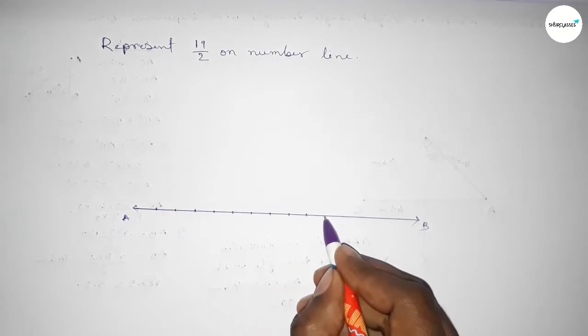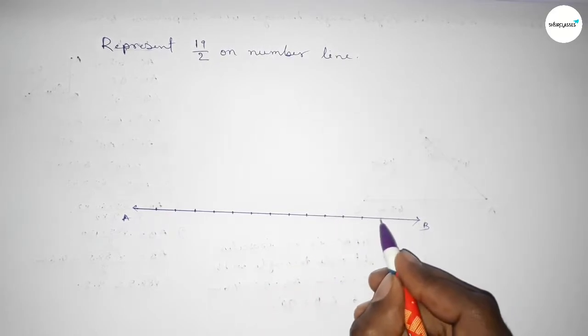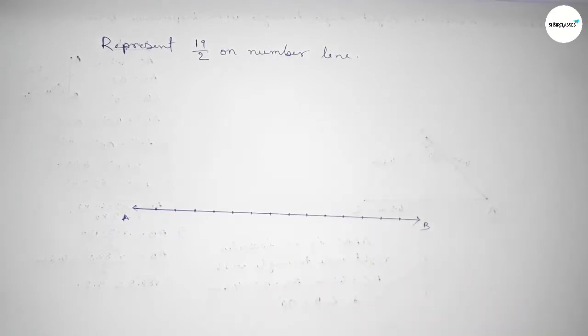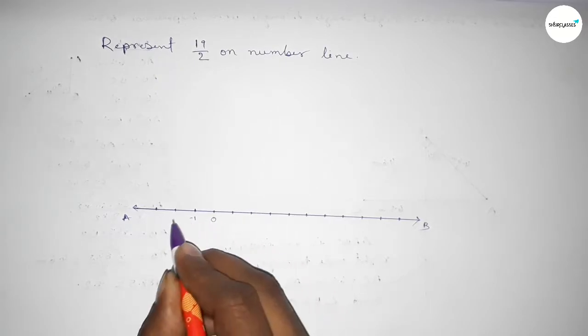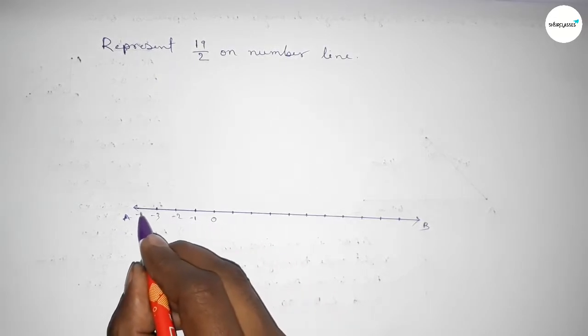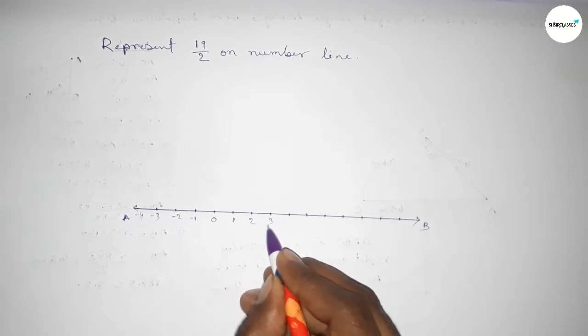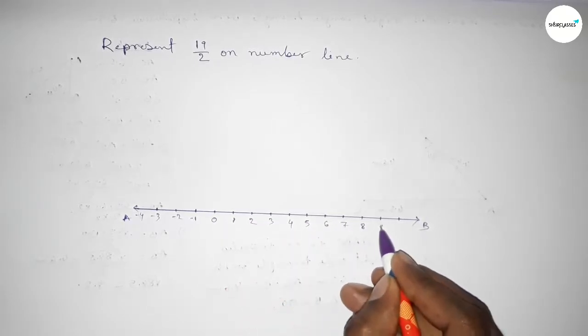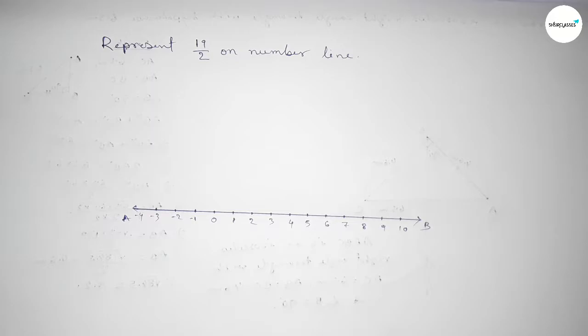So marking the numbers on the line. This is starting 0, 1, minus 1, minus 2, minus 3, minus 4. And this side 1, 2, 3, 4, 5, 6, 7, 8, 9, 10.